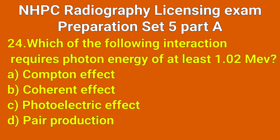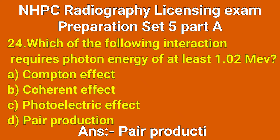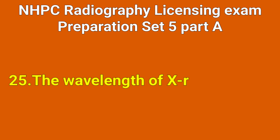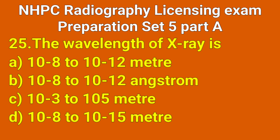Question number 24: Which of the following interaction requires photon energy of at least 1.02 MeV? Correct answer: option D, pair production.